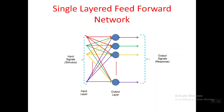The input signals are called stimulus and output signals are called response. Information from all input nodes is multiplied with corresponding weights, given to the corresponding output neurons, and according to the activation function the output is produced. This is what happens in the single-layered feedforward network.